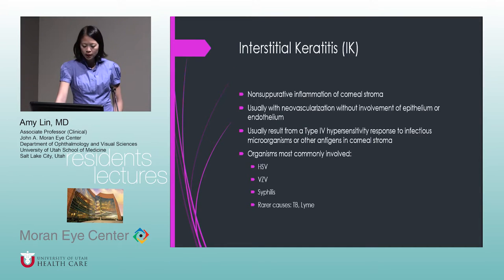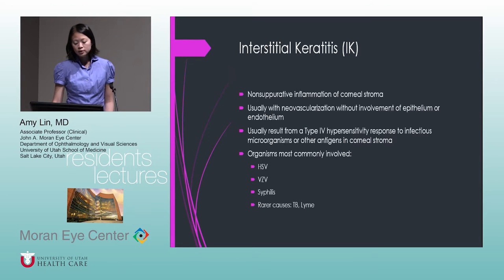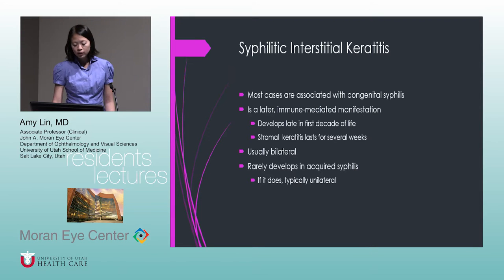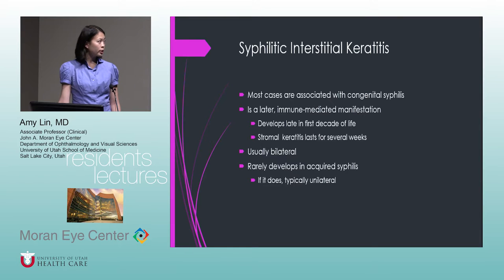Interstitial keratitis is a non-suppurative inflammation of the corneal stroma, usually with neovascularization and without involvement of the epithelium or endothelium. It usually results from a type 4 hypersensitivity response to an infectious agent or other antigens in the corneal stroma. Most commonly you'll see this with HSV, zoster, and syphilis. There are rare causes such as TB and Lyme. Most cases are seen with syphilis — specifically congenital syphilis — as a later immune-mediated manifestation developing late in the first decade of life.